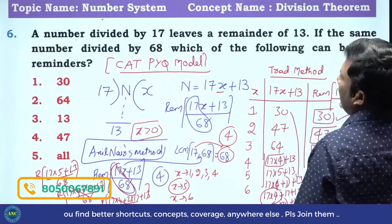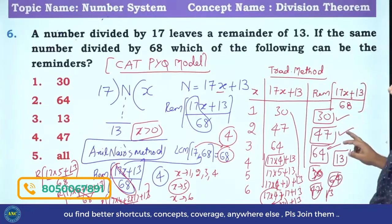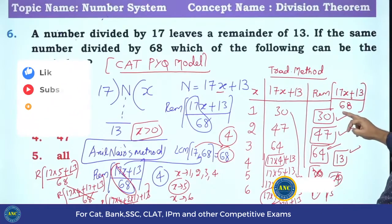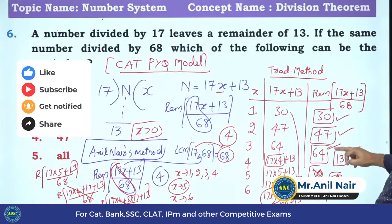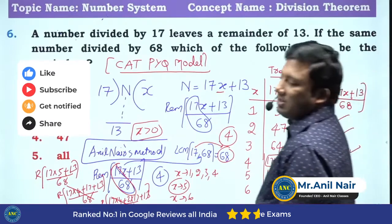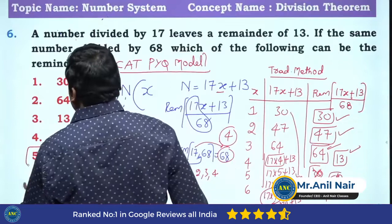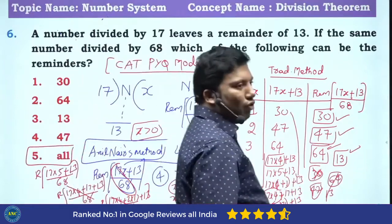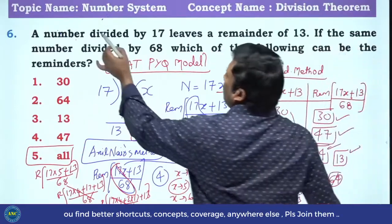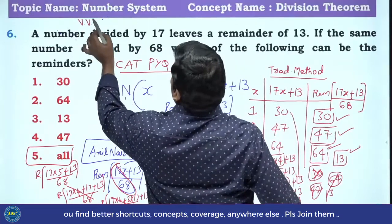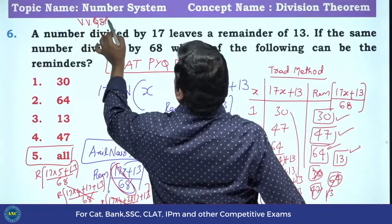Answer is, which of the following can be the remainders? Which of the following can be the remainders? 30, 47, 64, 13. Answer is all. There will be 4 remainders, and these are the 4 values. Very very good question. Please put a star mark on this question. Very very good question, sir.